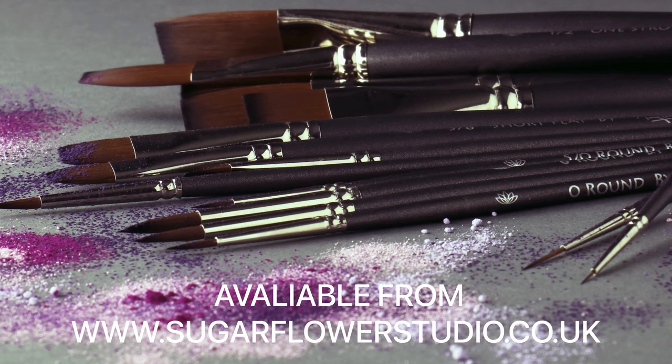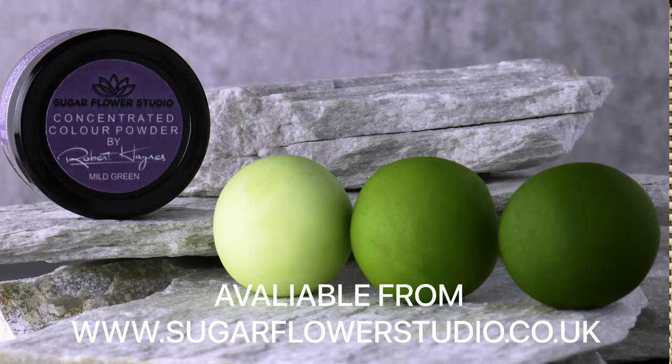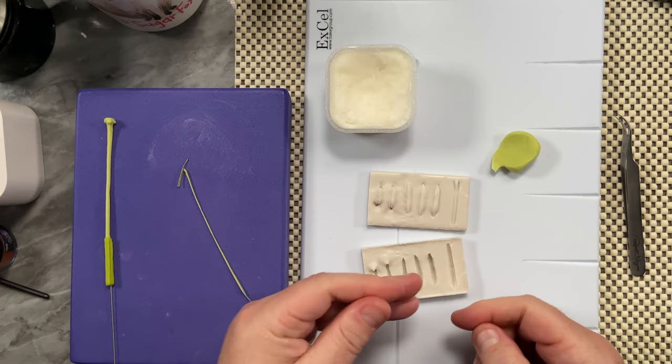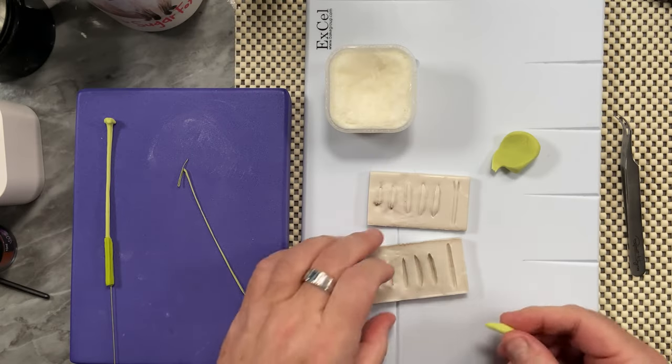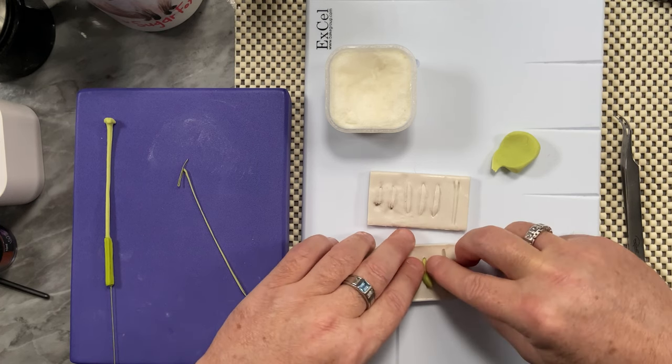Use a little bit of the Crisco or the Trex in one of the little cavities here for the anther cap and just knead this up. Make sure it's really nice and soft, then it's going to get all of these fabulous details, and then push that down inside the mold.